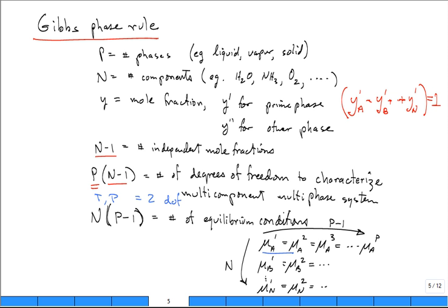Think of P being the number of phases. So if you have liquid only, P is 1. Liquid and vapor, P is 2. Liquid, vapor, solid, P is 3, and we really don't go beyond that.